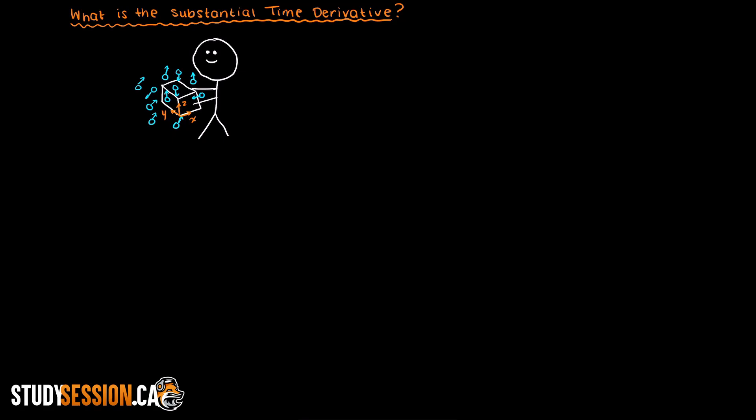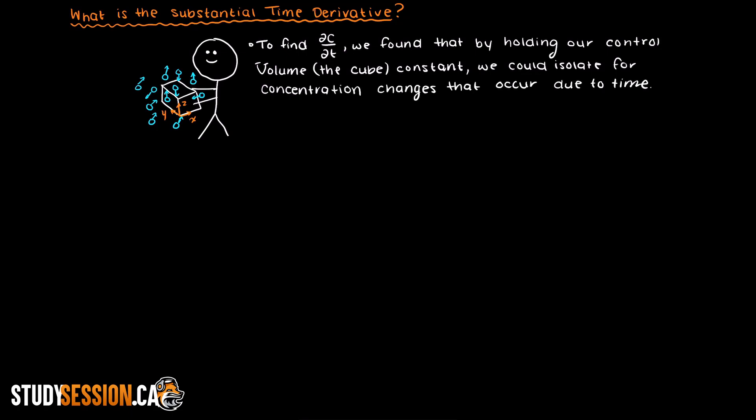To find the partial time derivative, we said that we could find it by holding our spatial coordinates for our cube constant. By not moving our cube, we know that the only way the concentration in our cube control volume can change is going to be with time.